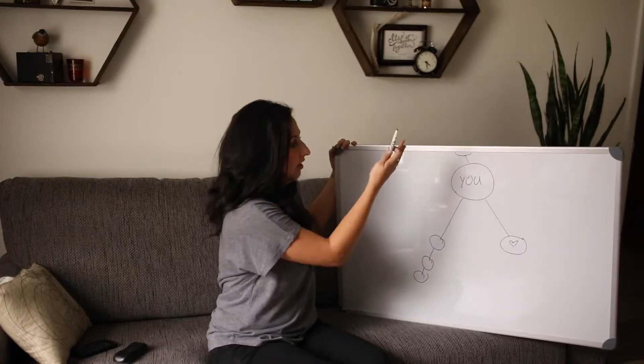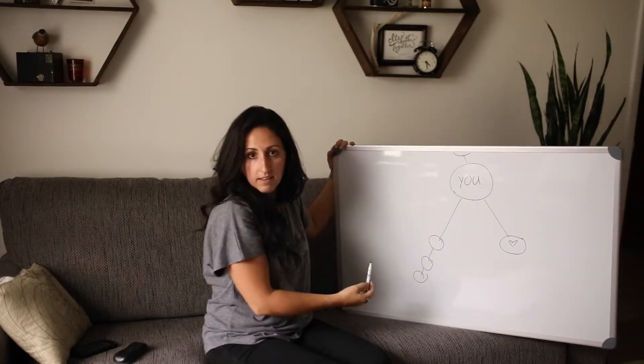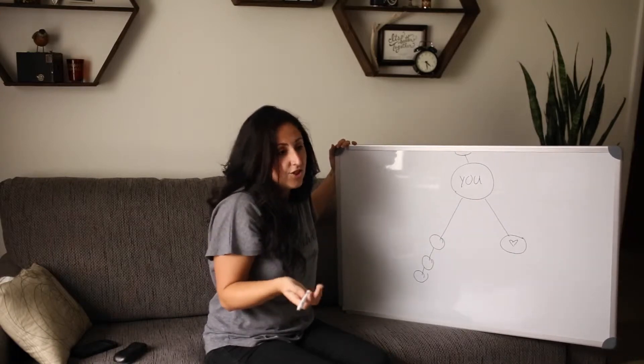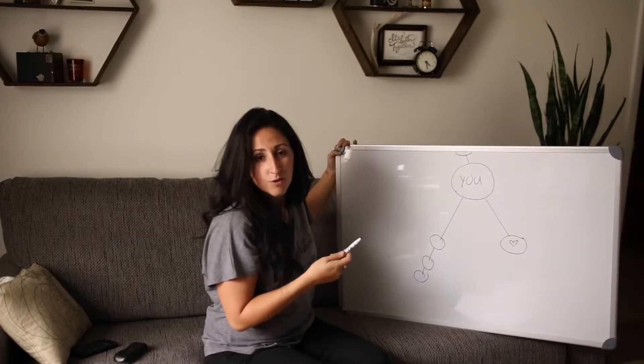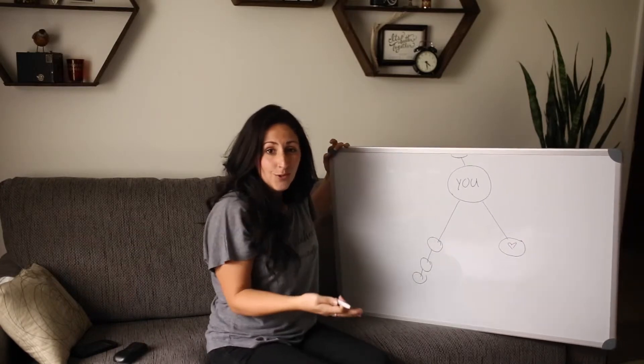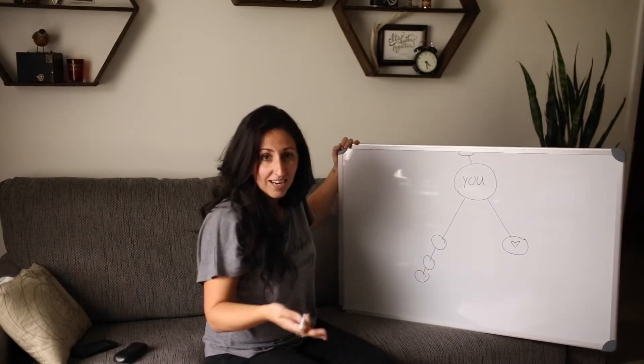Anytime people above you in your upline, which is what everybody above you is called, adds a new coach, they go down onto the left or right side. So they get put underneath coaches that are already there. This is just an added blessing. These coaches don't go towards your qualification status, but they do go towards your team volume. So it's just kind of an extra bonus.